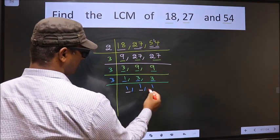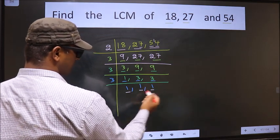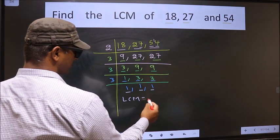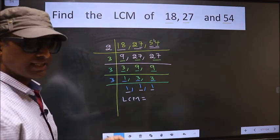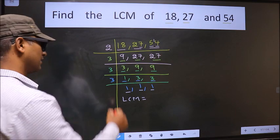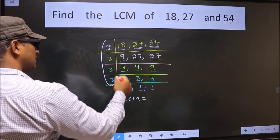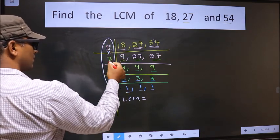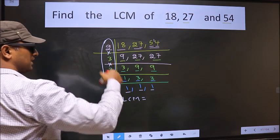We got 1 in all the 3 places. So our LCM is the product of these numbers. Product of these numbers.